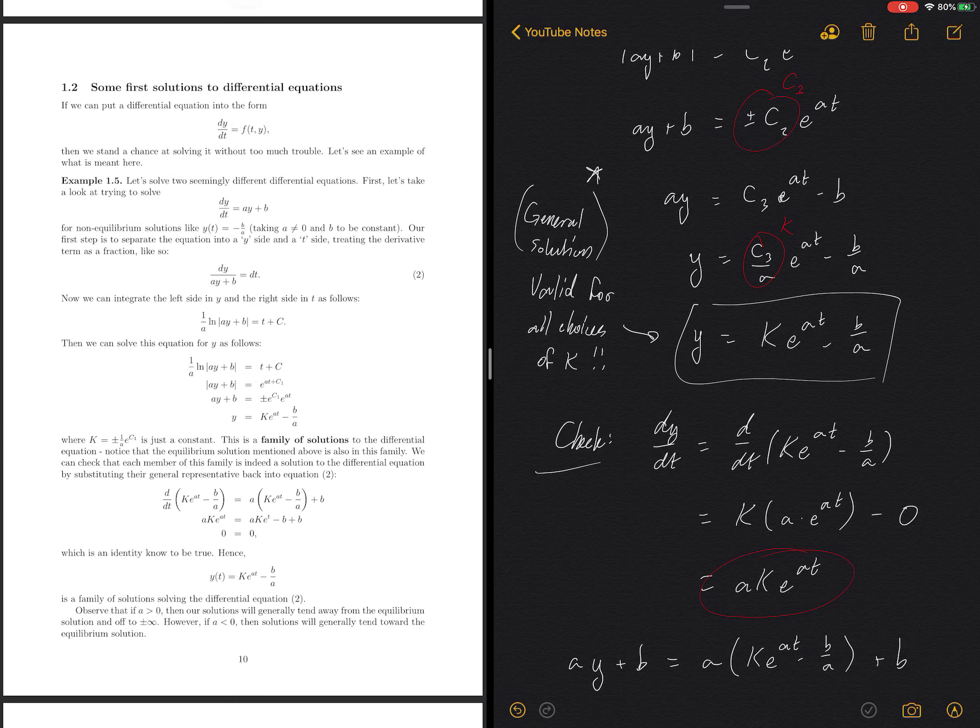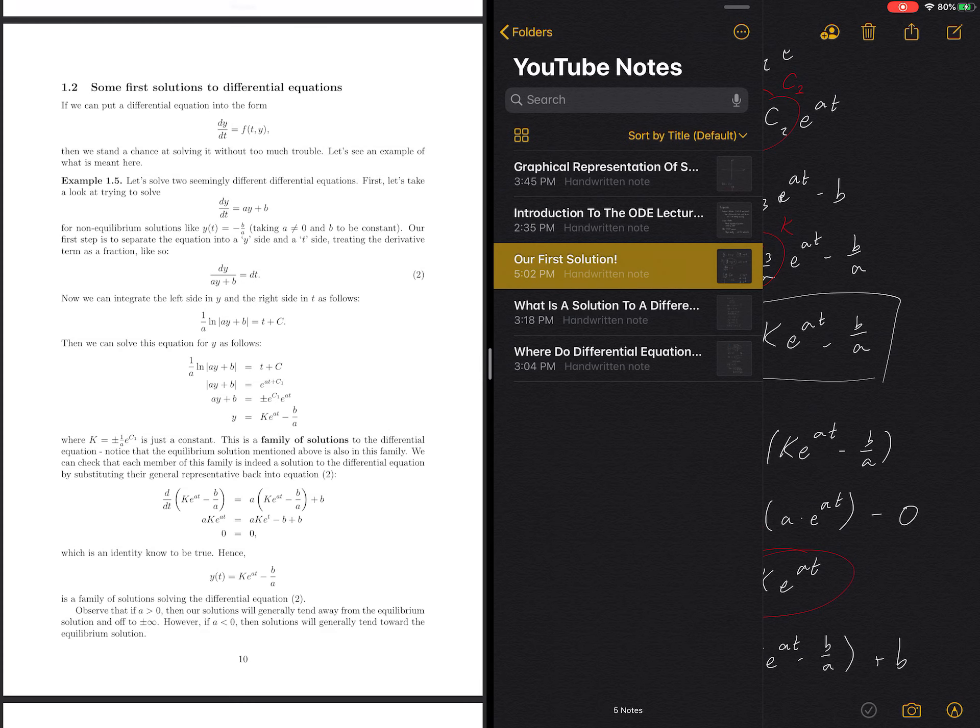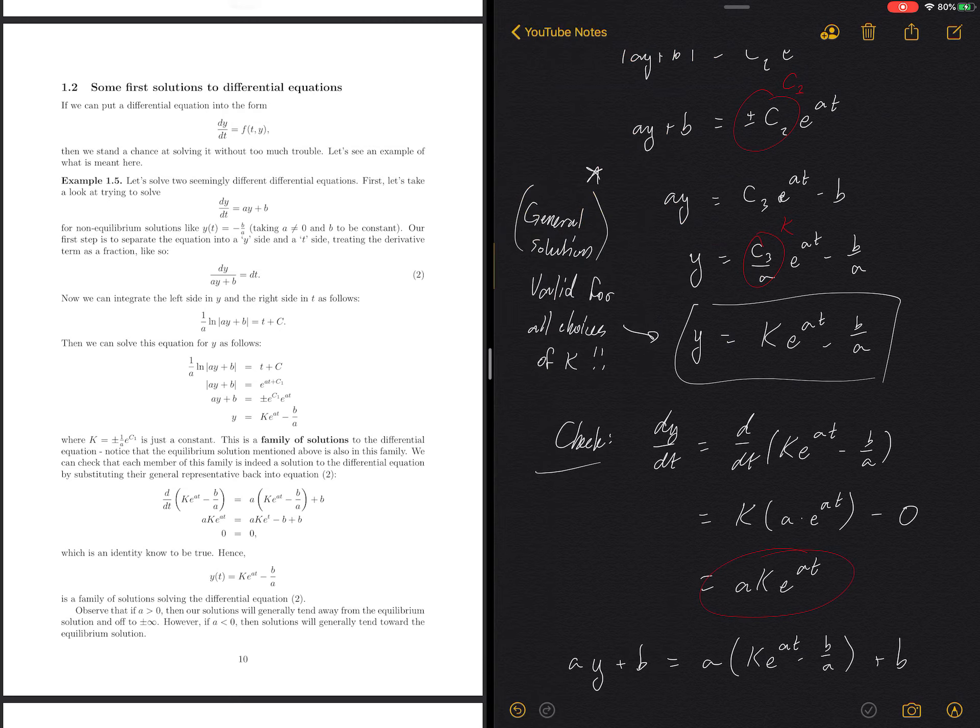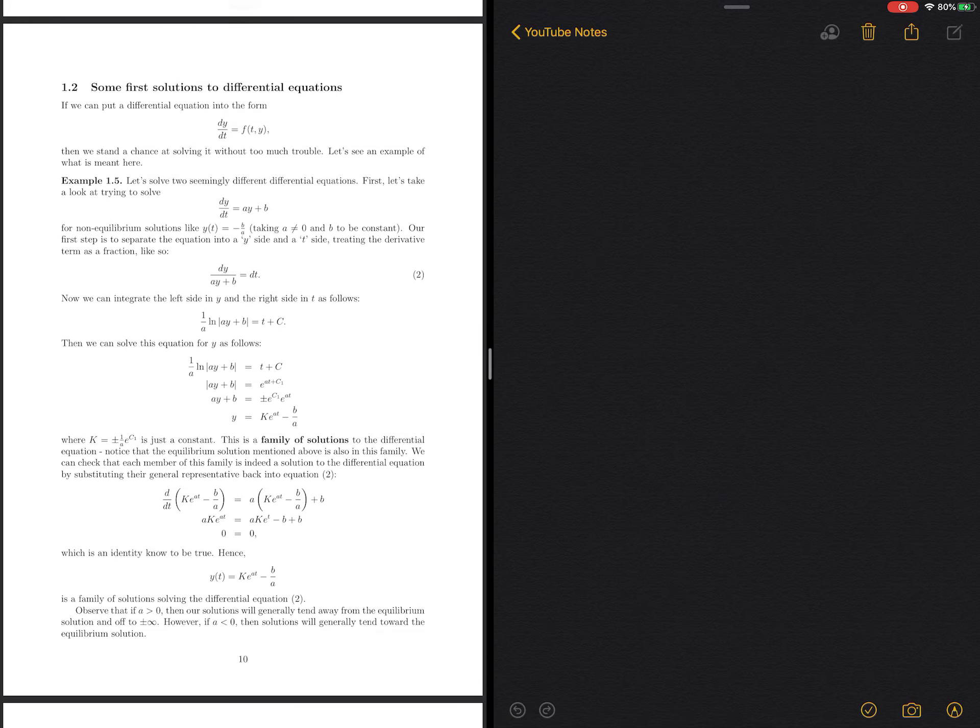But there is one last thing I wanted to say about this video, about this particular solution, and then talk about how this method that we did last time extends into a more general setting. So let me tell you about this general solution, this k e to the a t minus b over a. So let me go back to my new note. So our general solution, y of t equals k e to the a t minus b over a.